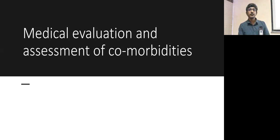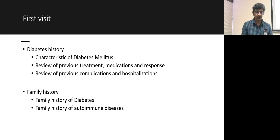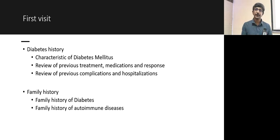When a patient is diagnosed with diabetes, the medical evaluation for comorbidities begins with history: characterize the type of diabetes — type 1, type 2, monogenic, or secondary to exocrine insufficiency. For previously diagnosed patients, review current medications, response to treatment, previous complications, hospitalizations, family history of diabetes, and family history of autoimmune diseases.